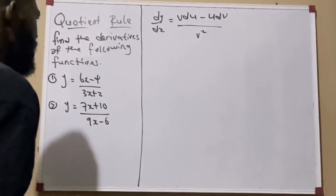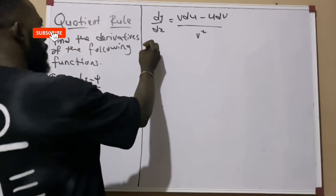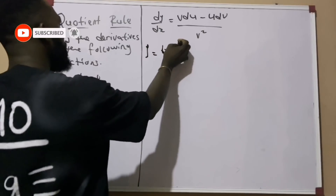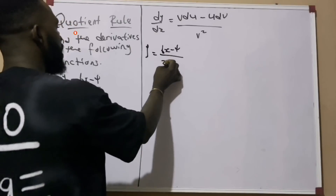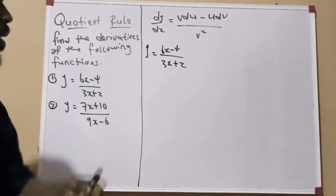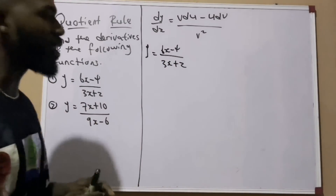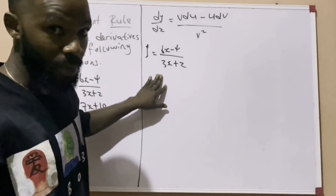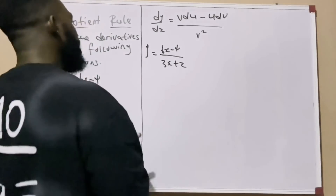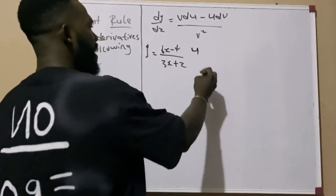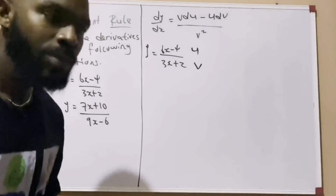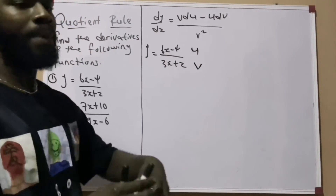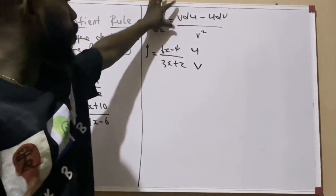Let's begin. Question one says: y equals (6x minus 4) over (3x plus 2). You will notice that we have two functions — one at the numerator and the other at the denominator. The one at the numerator is known as u, and the one at the denominator is known as v. Now that we know our u and our v, the next thing we do is apply the formula.